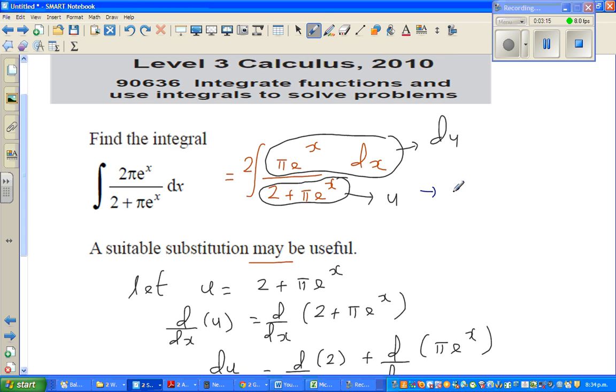This becomes integration 2 times integration of 1 over u du. Isn't this neat? This is equal to 2 times natural log of u plus c.